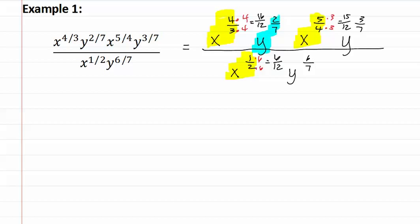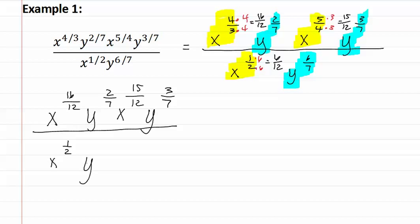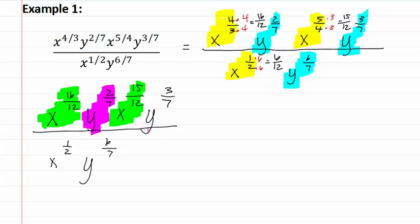Now let's look at the y's. All of the y's already have a denominator of seven, so we do not need to change them. Let's rewrite the problem again with its new fractional exponents: x to the sixteen-twelfths, y to the two-sevenths, x to the fifteen-twelfths, and y to the three-sevenths — all over x to the one-half and y to the six-sevenths. Let's start by combining the x's that are both on top, and the y's that are also both on top.